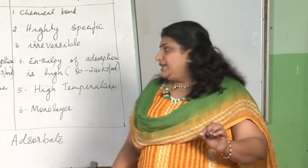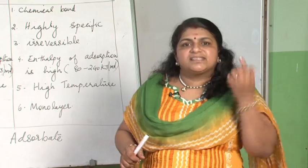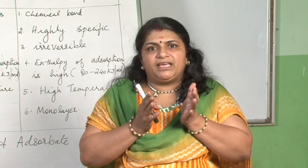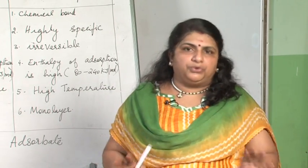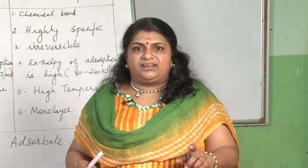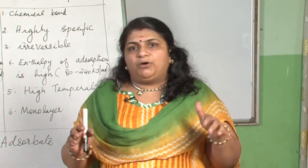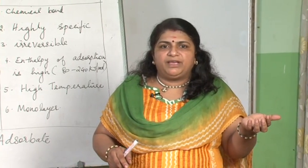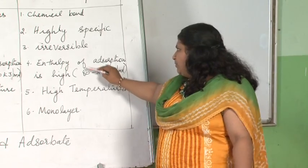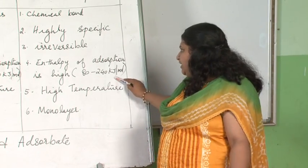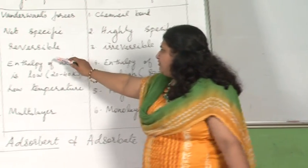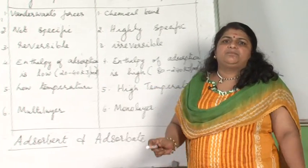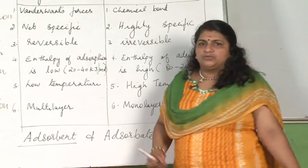Adsorption is an exothermic, heat-releasing process. As studied in class 11, if the bond formed is strong, the amount of energy released will be more. In chemisorption a chemical bond is formed, so the amount of energy released is more — 80 to 240 kJ per mole. In physisorption it is a simple Van der Waals force of attraction, so the energy released is equivalent to about a hydrogen bond — approximately 20 to 40 kJ per mole.